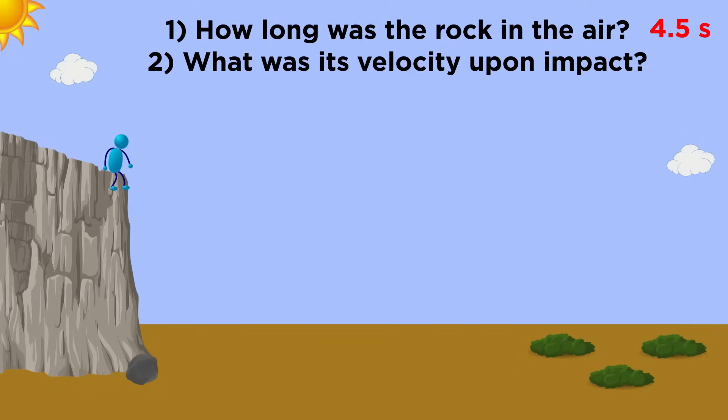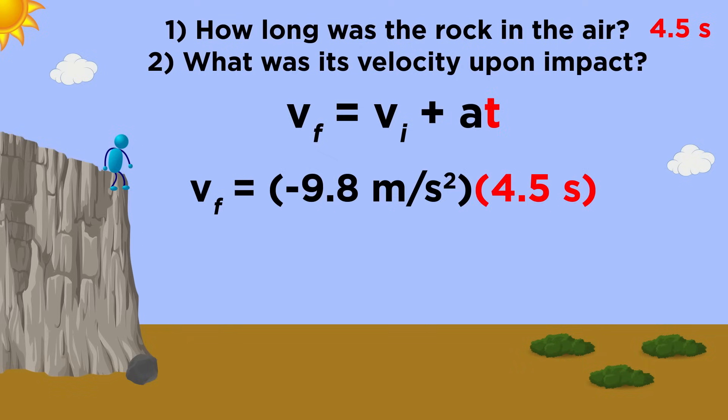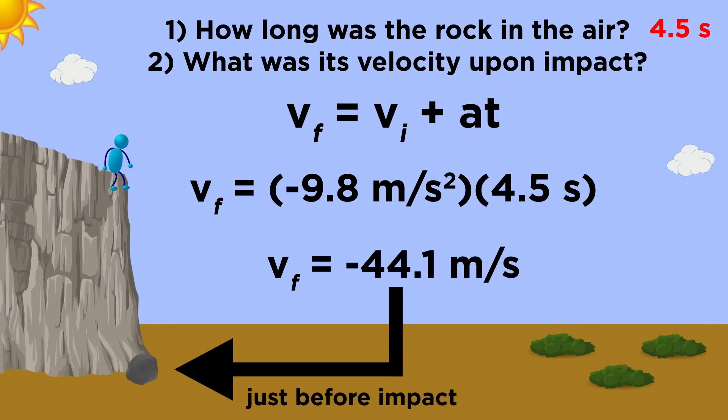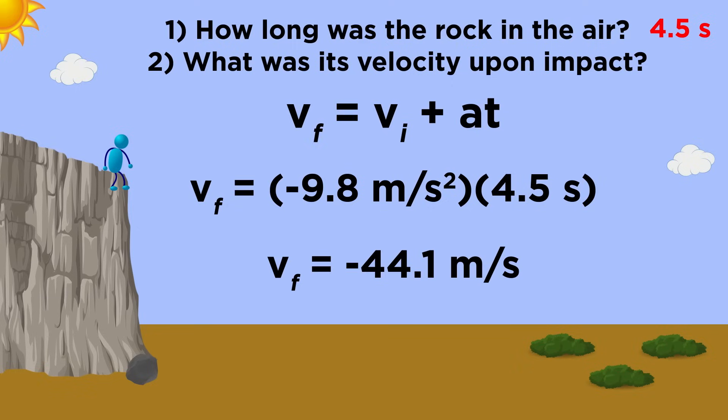Now if we want to know how fast it is going when it hits the ground, we can use this equation to solve for velocity. Again, initial velocity is zero, and we have negative 9.8 meters per second per second times 4.5 seconds, which gives us negative 44.1 meters per second at the time of impact. This value is negative because velocity is a vector, and the object is traveling in the negative direction.